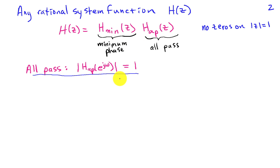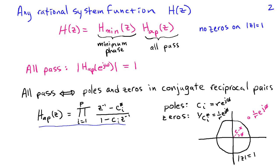Let's look at all-pass systems. What it means for a system to be all-pass is that the magnitude of its frequency response is equal to 1 for all frequencies — it treats all frequencies identically with respect to gain. The general form of an all-pass system is to have the poles and zeros occur in conjugate reciprocal pairs, so an arbitrary all-pass system can be written as a product from i equals 1 to p of pole-zero pairs.